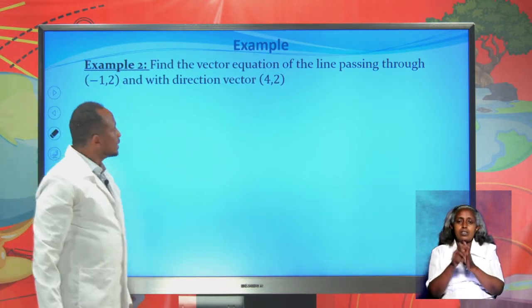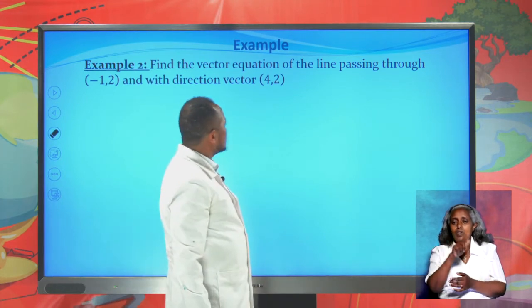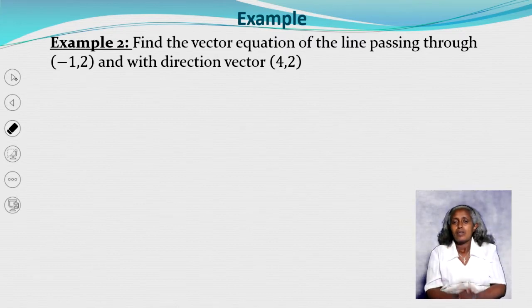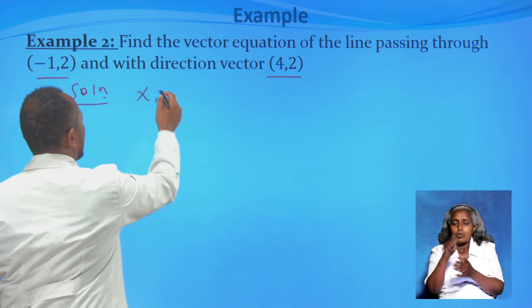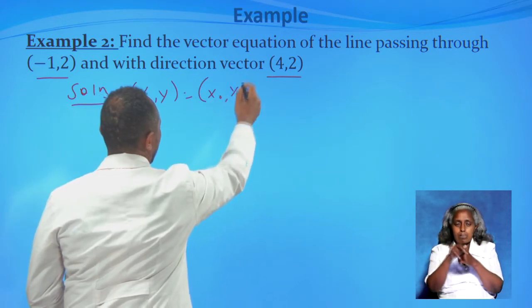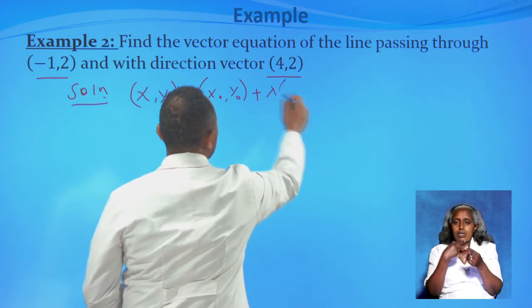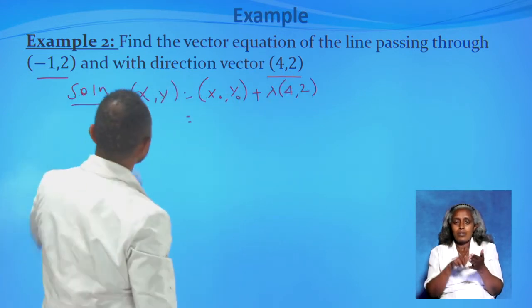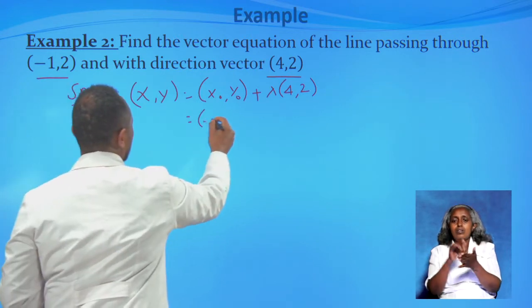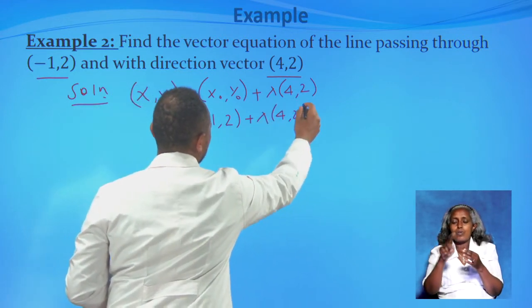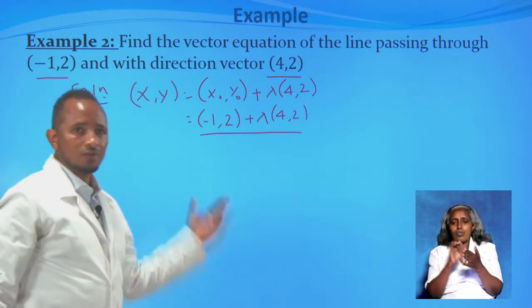Next example: Find the vector equation of a line passing through (−1, 2) with direction vector (4, 2). Using the formula, the vector form is (x, y) = (−1, 2) + λ(4, 2). This is the vector form of the equation of the line.